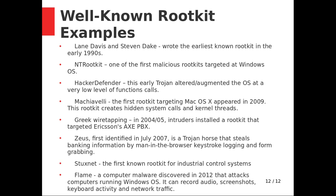Some well-known rootkit examples: First, Lane Davis and Steven Dake wrote the earliest known rootkit in the early 1990s. Second, NTRootkit was one of the first malicious rootkits targeting the Windows OS. Third, HackerDefender, an early trojan, altered the OS at a very low level of function calls. Fourth, Machiavelli was the first rootkit targeting Mac OS X, appearing in 2009, creating hidden system calls and kernel threads.